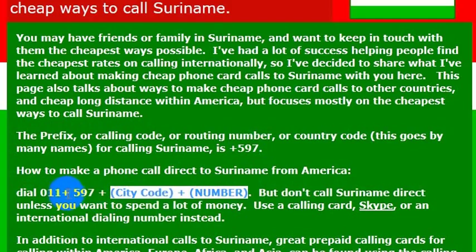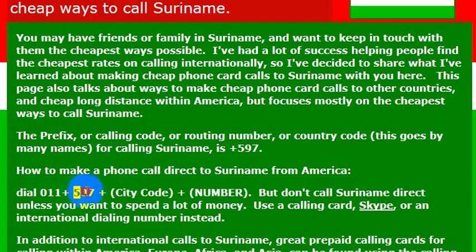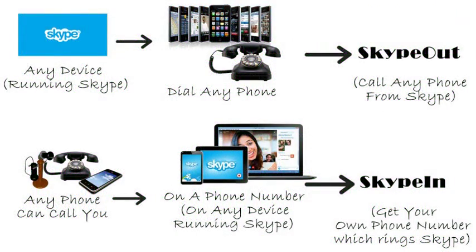Again, the country code for Suriname is 597. But I wouldn't really recommend calling direct — your phone company will charge you a lot of money. If you want to call a phone number, I really recommend using Skype.